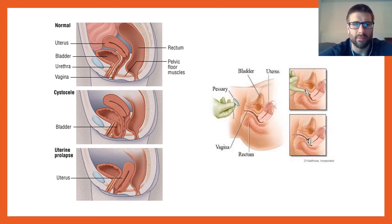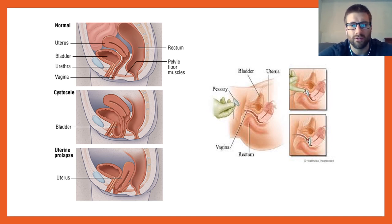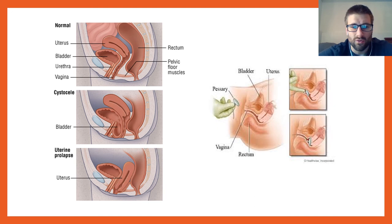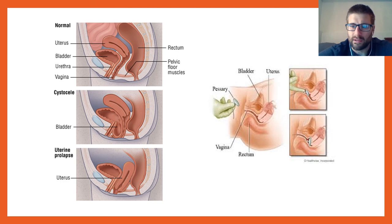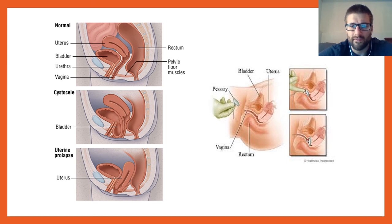On imaging: the normal anatomy shows the bladder, uterus, and rectum. A cystocele shows the bladder protruding into the anterior vaginal canal. Uterine prolapse shows the uterus protruding downward, explaining the complaint of pelvic pressure. A pessary is inserted to lie in the anterior and posterior fornices of the vaginal canal to support the pelvic organs.